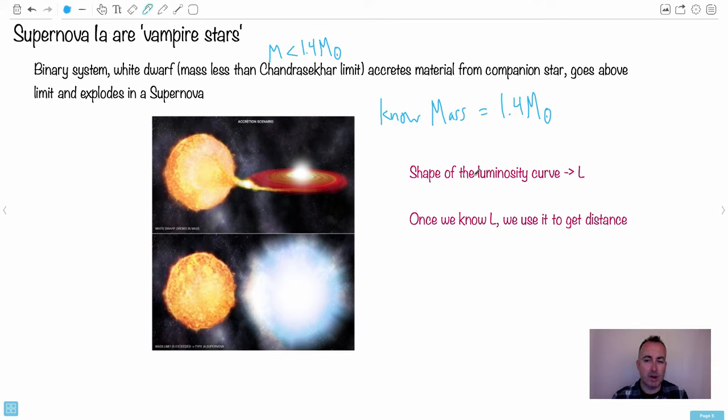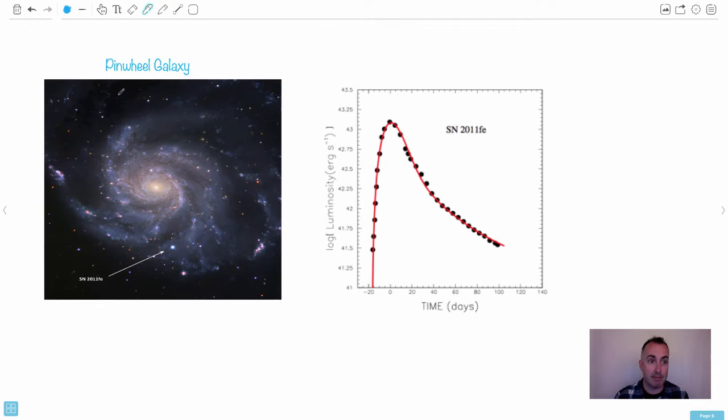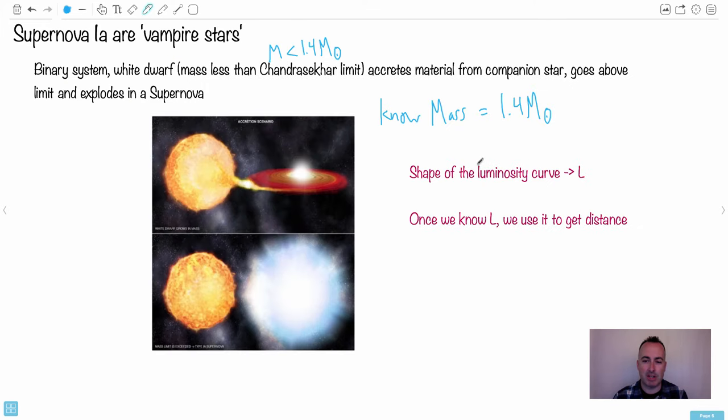So if we see one of these called type 1a supernova, turns out it's not the luminosity itself, not the peak, but it turns out the shape of the luminosity curve. In other words, we have this little curve right here. This is an example. This is a pinwheel galaxy and this right here was a supernova called SN 2011 FE. Guess what the 2011 means. It tells you the year. So this is a supernova found in 2011 in the pinwheel galaxy, and can you see how bright it is compared to the rest of the galaxy. It's crazy bright. It turns out it's the shape. But what we can do is we can match the shape of the luminosity curve and from that we can find L.